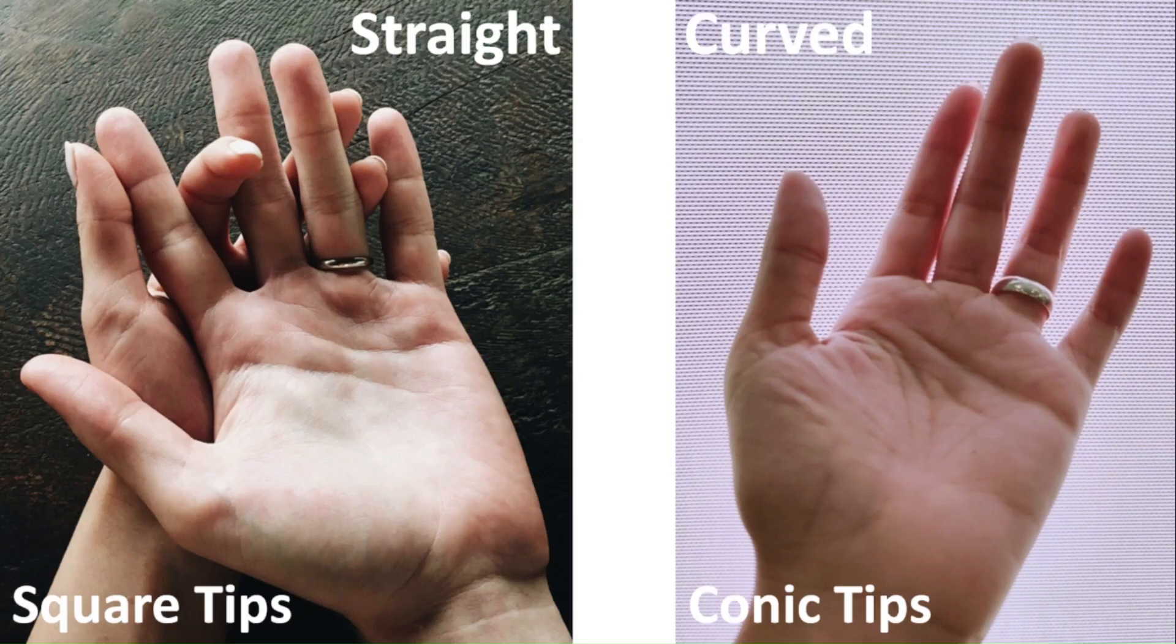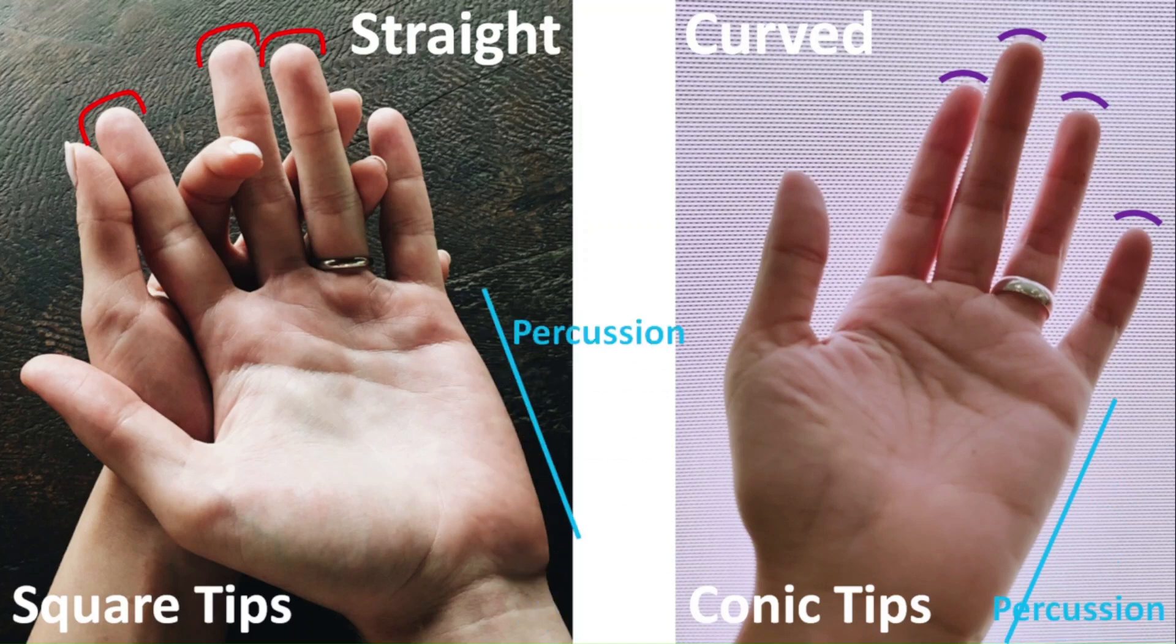The same concept can be applied to the fingertips. The hand on the left has square tips, as they're somewhat leveled at the tip, while the hand on the right has conic or rounded tips, making it a bit more creative and intuitive. But notice how the percussions on both hands are very straight, meaning both people aren't interested in being creative. That's probably a more accurate observation for the hand on the left, since the fingertips are squared, adding to the straightness of the hands.